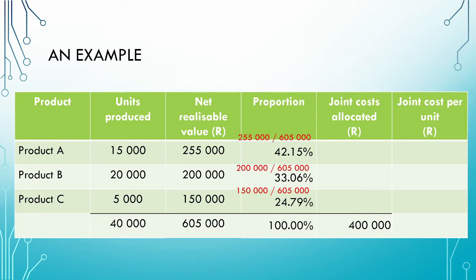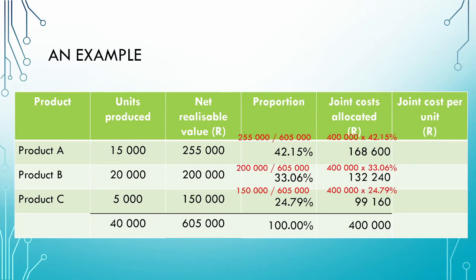We use the proportions to allocate the joint costs. Product A receives R400,000 multiplied by 42.15%, giving R168,600. Product B receives R400,000 multiplied by 33.06%, giving R132,240. Product C receives R400,000 multiplied by 24.79%, giving R99,160. The joint cost per unit is then the allocated joint cost divided by units produced: R11.24 for product A, R6.61 for product B, and R19.83 for product C.